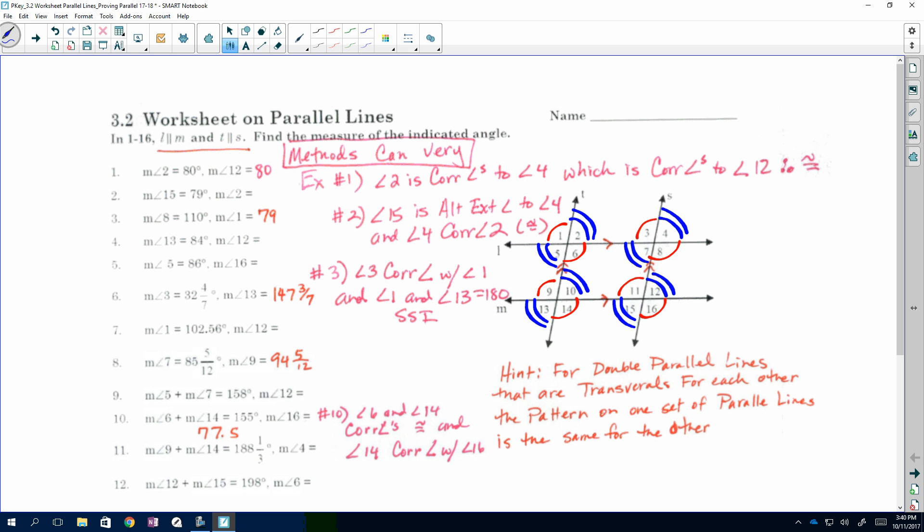So, understand that the measure of the indicated angle is not going to stay. It's going to change for each problem. So, I'm just going to go to, like, for example, number 5. Number 5 says the measure of angle 5 is 86. So, then they say, well, what would the measure of angle 16 be? Well, 5 has two arcs. Angle 16 has one arc. So, together, they would be supplementary. So, I would have to do 180 minus the 86. So this would be 94, okay?